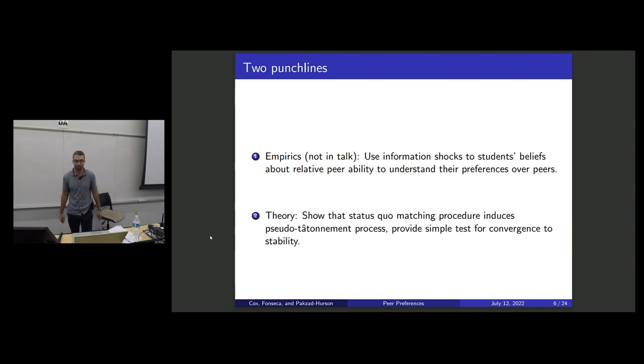There are two different avenues that we take in this paper. One is an empirical one, which I'm not going to talk about just for time reasons. But we can use information shocks to students' beliefs about their relative ability compared to their peers at each program to understand their preferences over peers. And there's this theory component which I'll spend most of the time talking about, which is we take this status quo process where people learn from the past, and we show that this induces a tatonnement process.